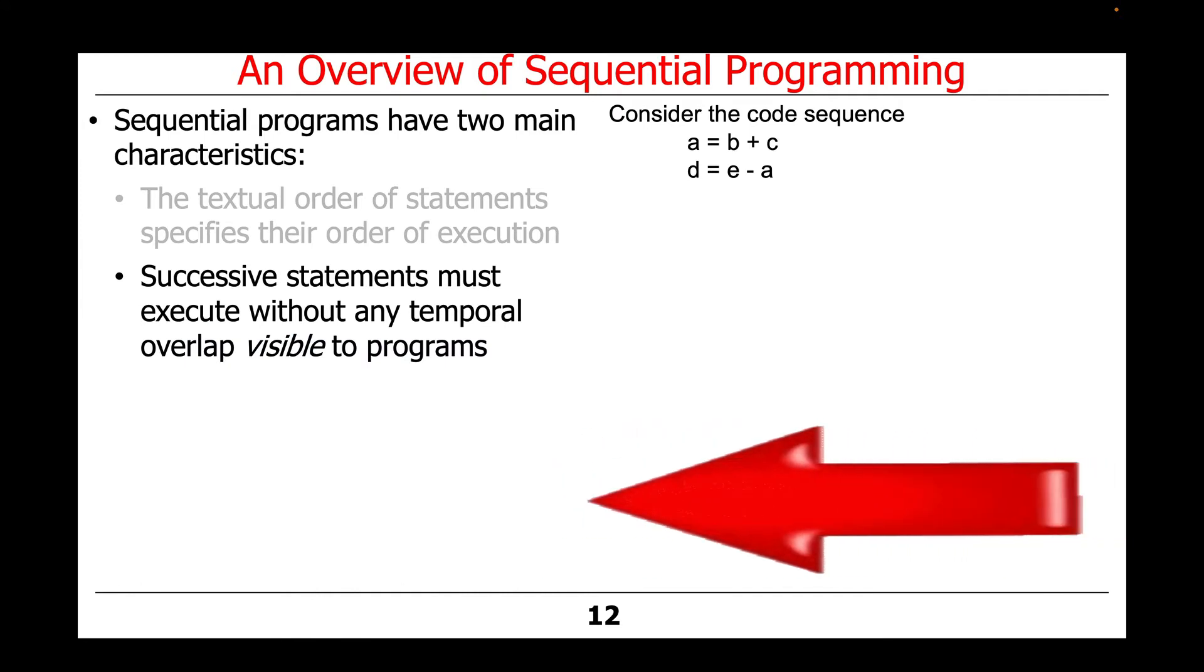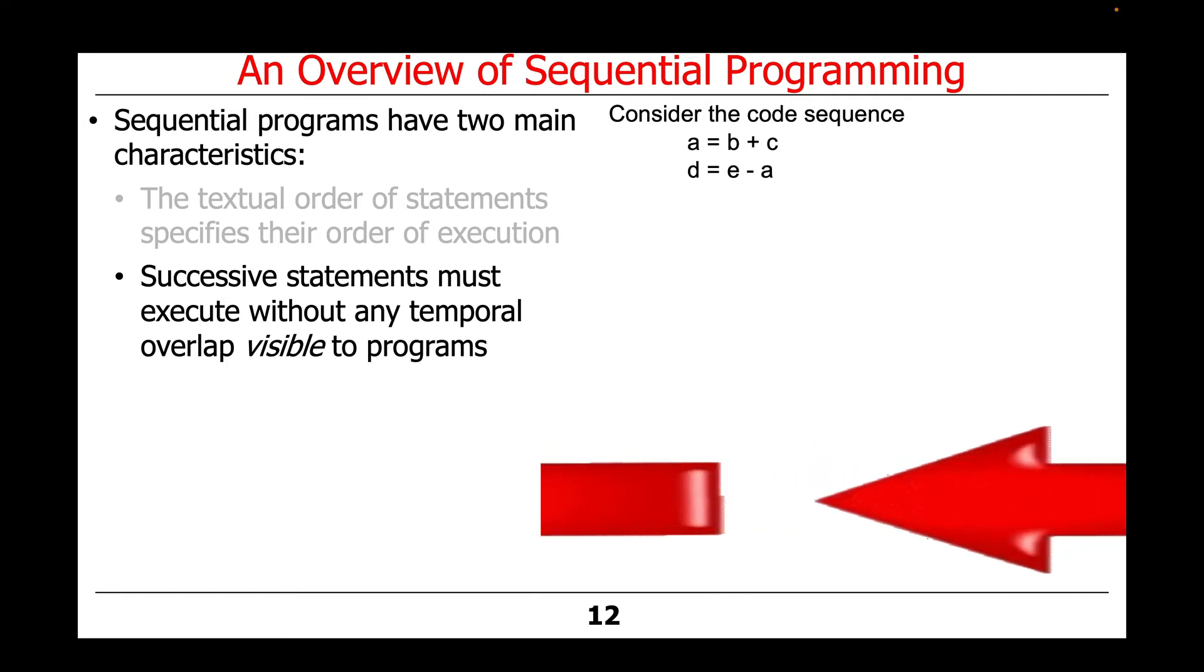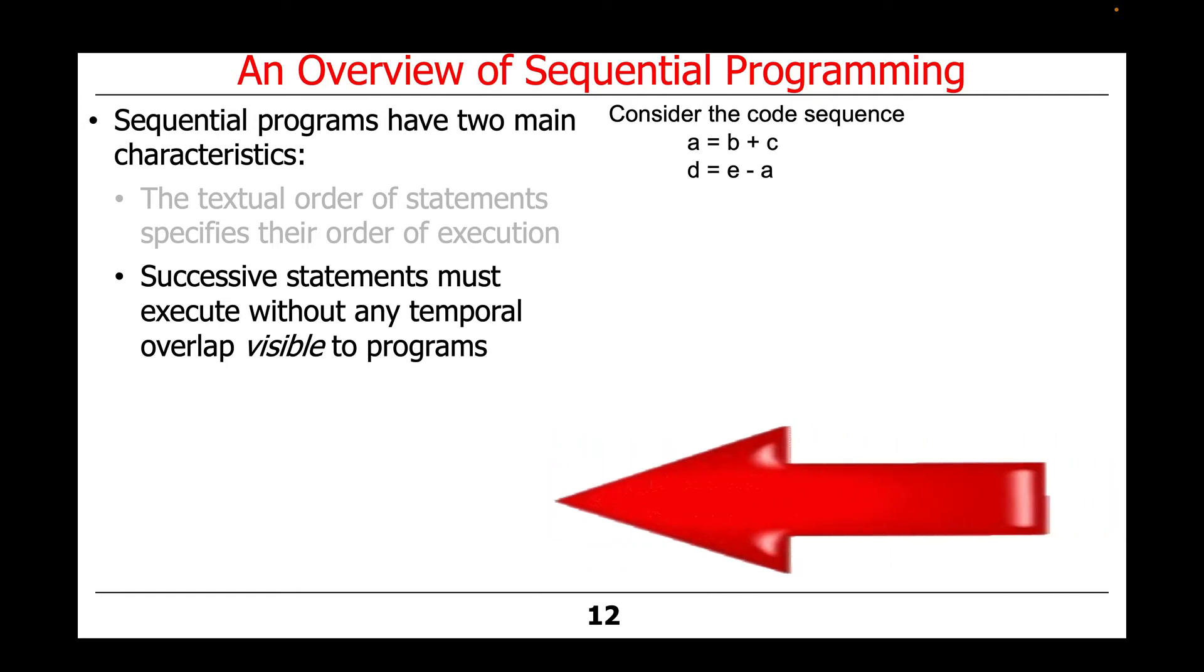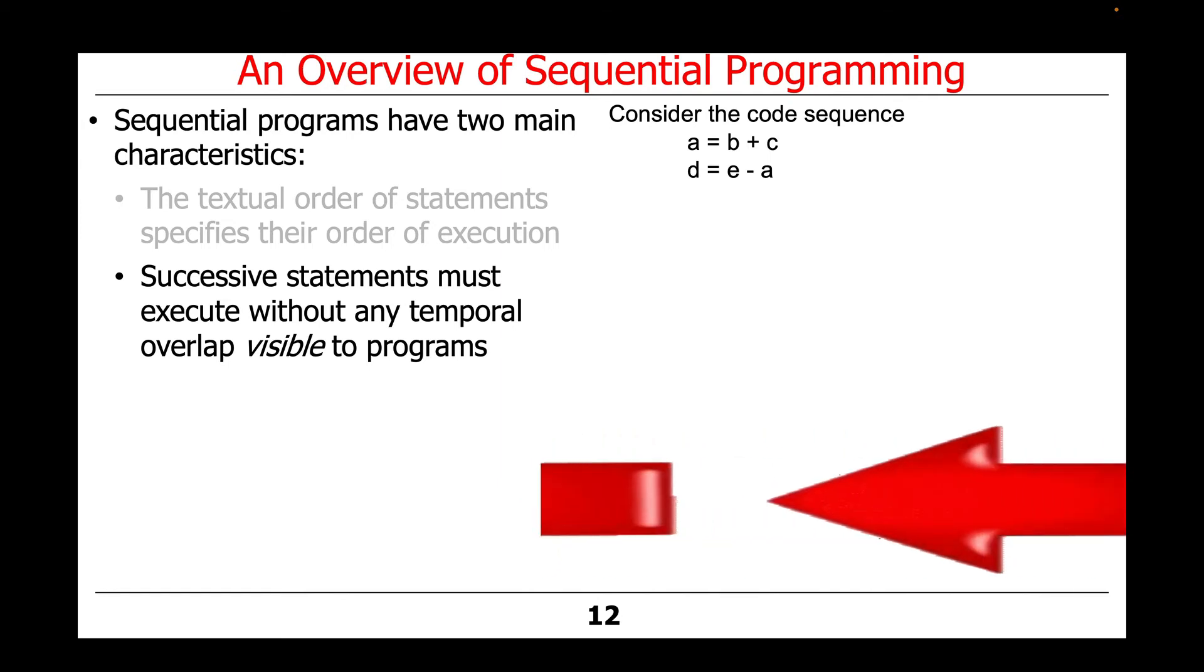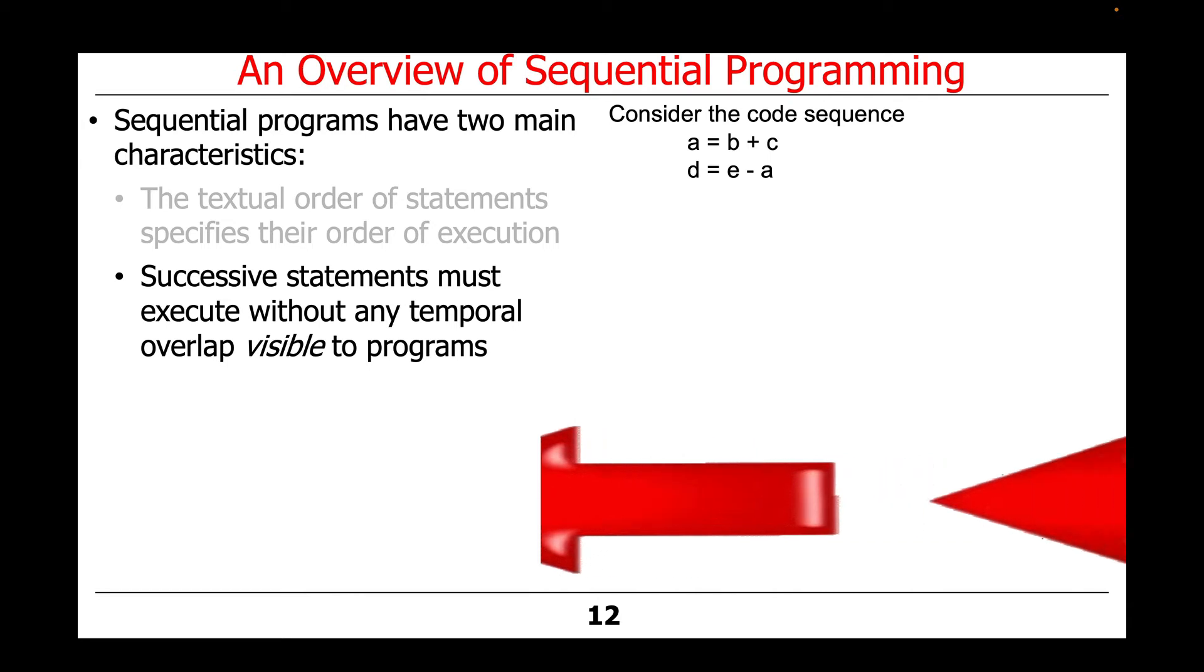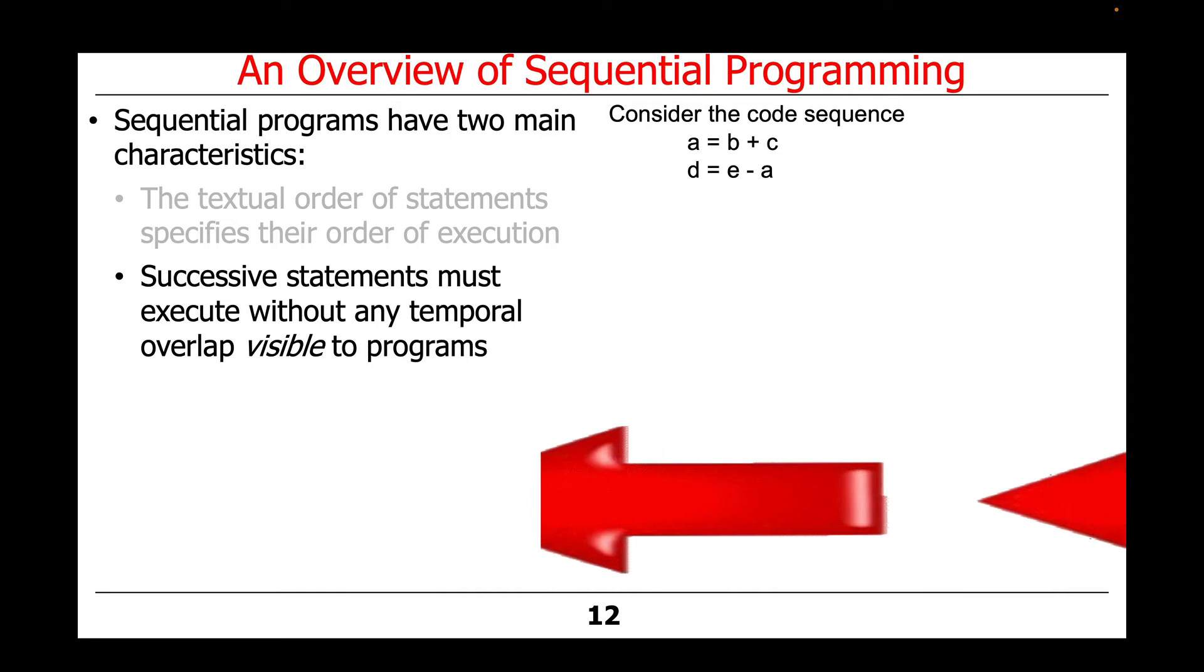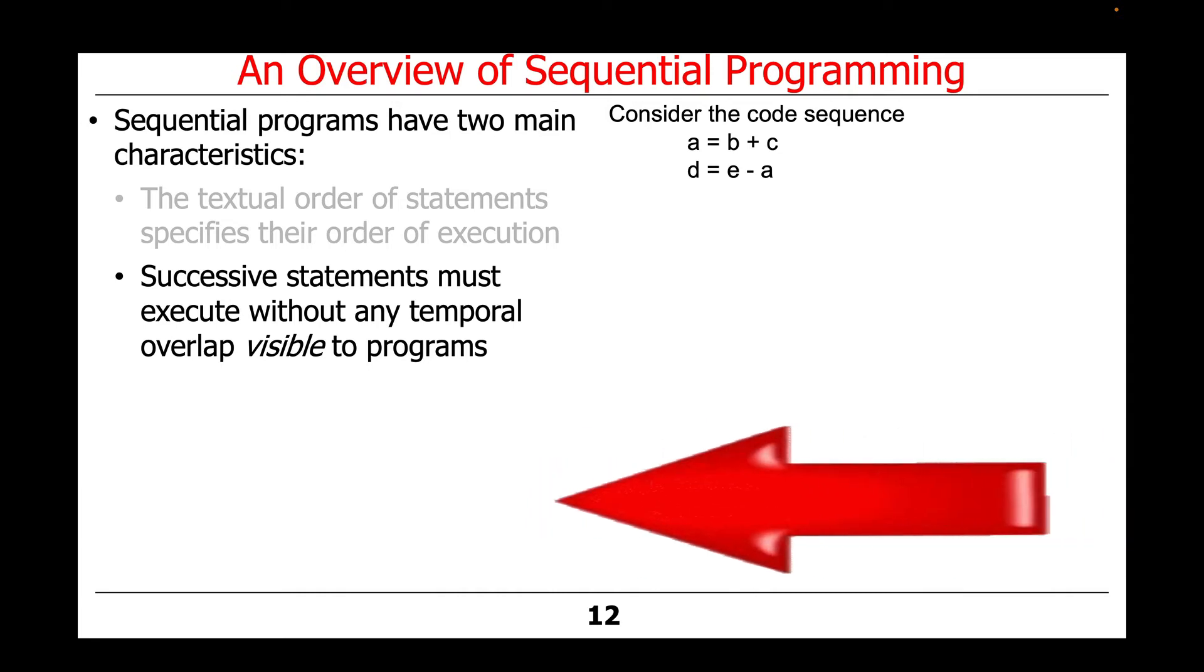Another characteristic of a sequential program is that successive statements must execute without any temporal overlap that's visible to programs. What that really means is there could be all kinds of clever optimizations under the hood, but the effect should be as if the statements executed successfully and sequentially without any temporal overlap.